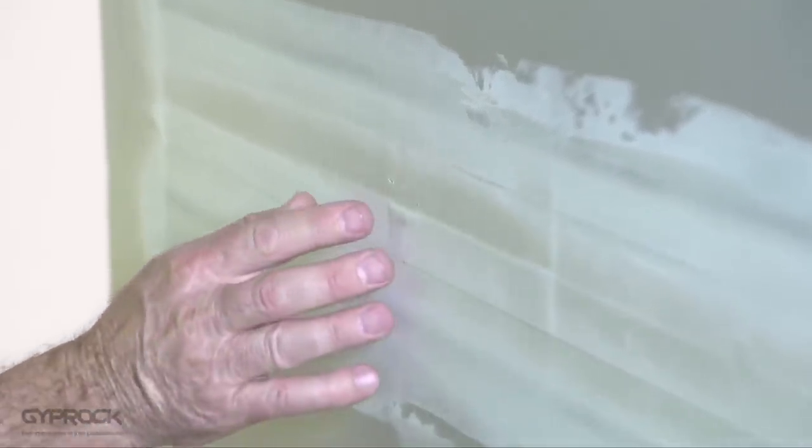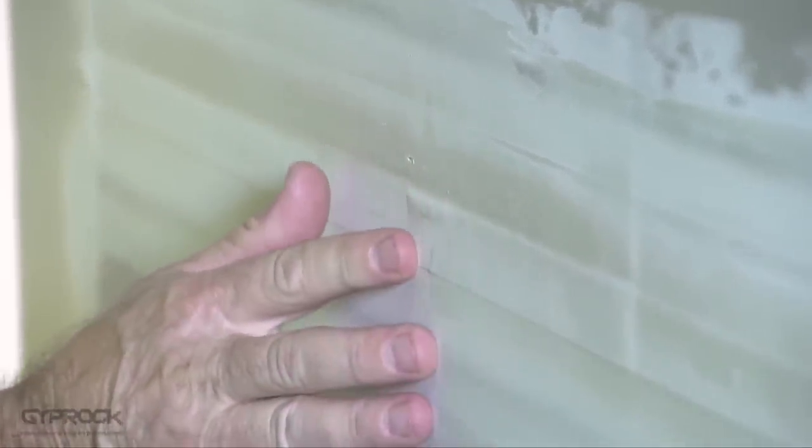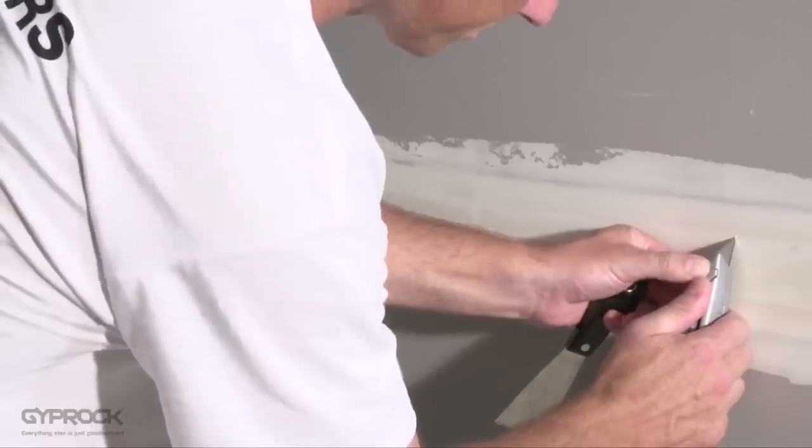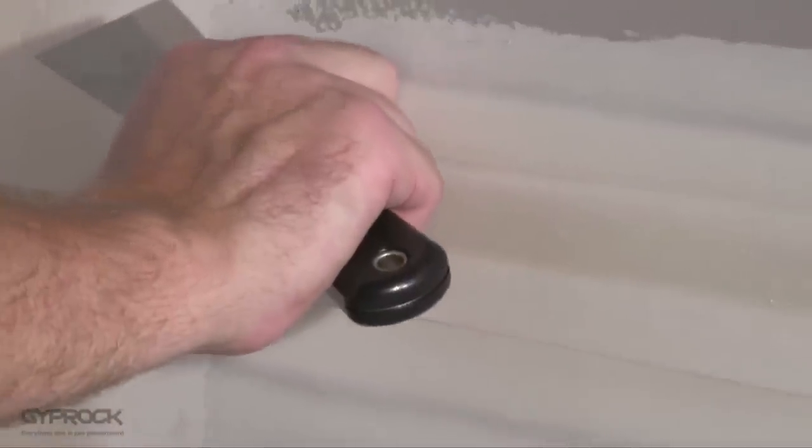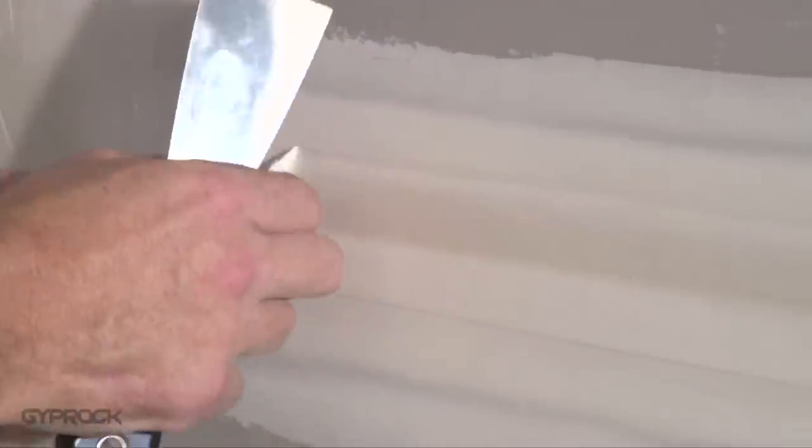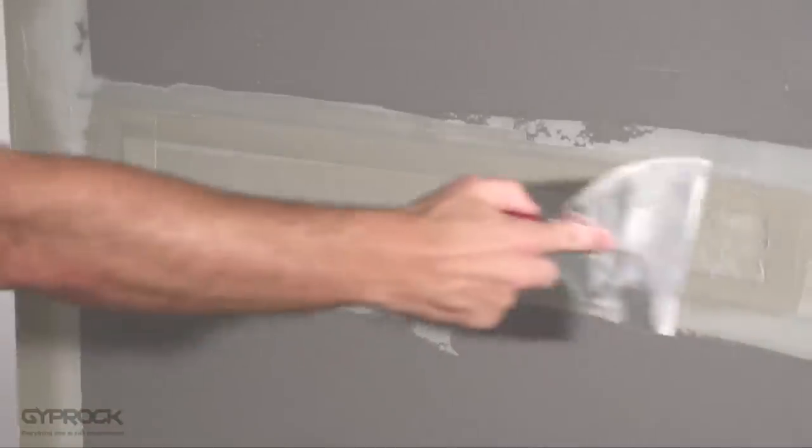If you come across any tape that's loose or has air bubbles under it, you'll need to remove that section and reset it. Cut through the tape at each end of the section and gently pull the tape and compound away from the board. Then repeat the complete three coat jointing process. We covered that in video four.